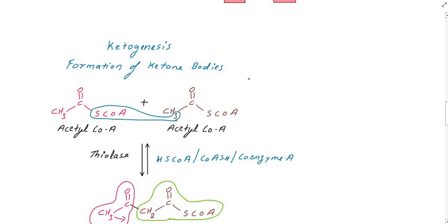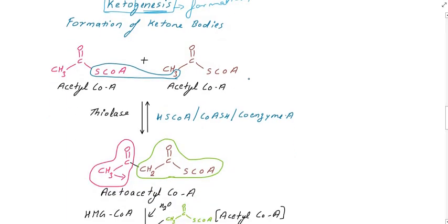There are two key terms: ketogenesis and ketolysis. Ketogenesis means the formation of ketone bodies, while ketolysis means the breakdown of ketone bodies. Ketone bodies serve as an alternate source of energy.